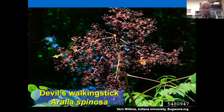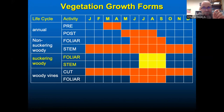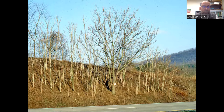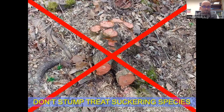The operational window for treating suckering species is summer. Further south, this may begin as early as mid-June.